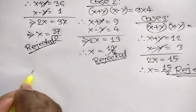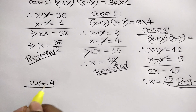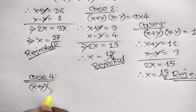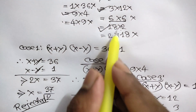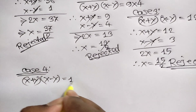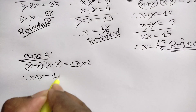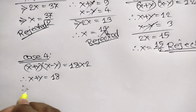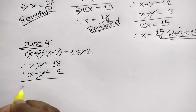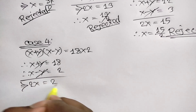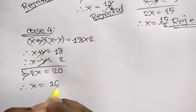Case 4: x plus y times x minus y is equal to 18 times 2. So x plus y is equal to 18 and x minus y is equal to 2. Adding these two equations, we get 2x is equal to 18 plus 2, which is 20. Dividing both sides by 2, we get x is equal to 10.